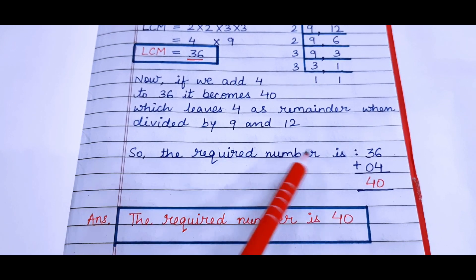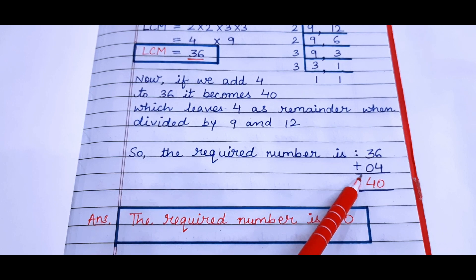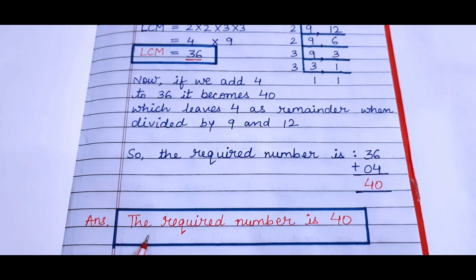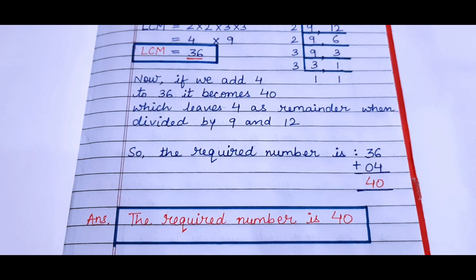So the required number is 36 + 4 = 40. So the answer is the required number is 40. I hope it is clear to all of you.